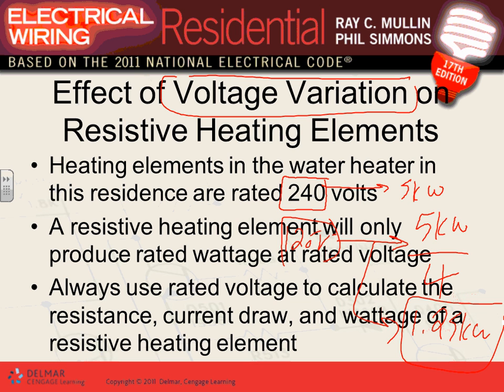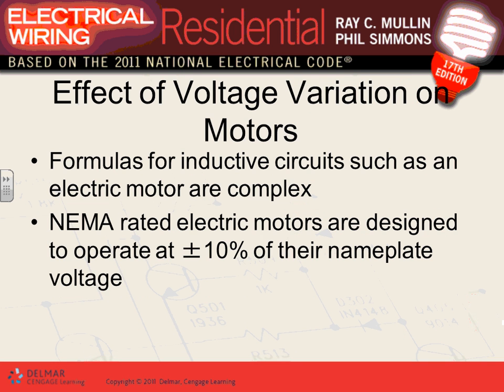If a water heater rated for 240V is accidentally wired at 120V, output drops to 1.25 kW — one-fourth of the rated 5 kW. You'll notice immediately because water won't heat up. Conversely, if a 120V heater gets 240V, it burns the equipment immediately. Key rule: double the voltage and you quadruple the power; cut voltage in half and power drops to one-fourth.